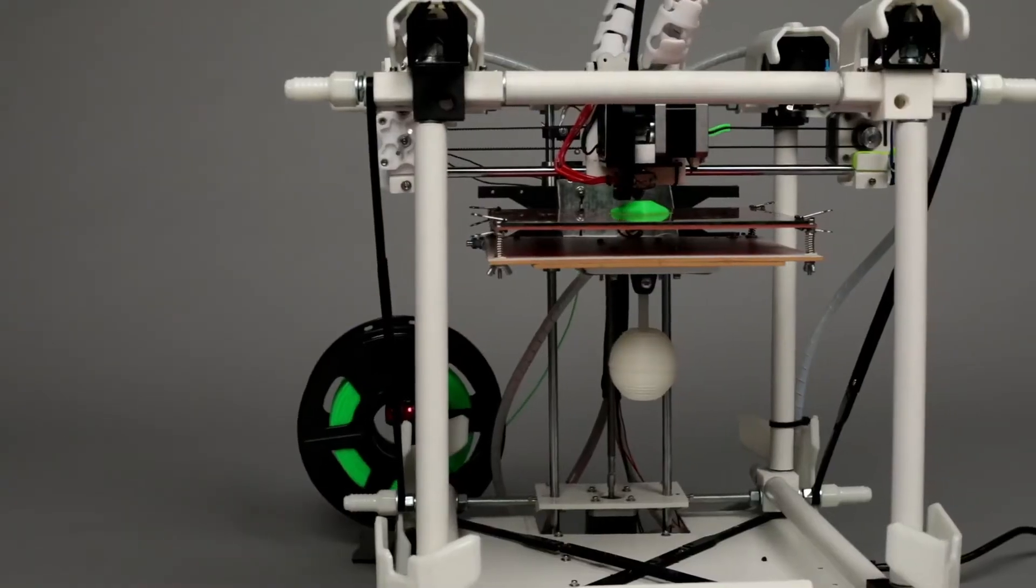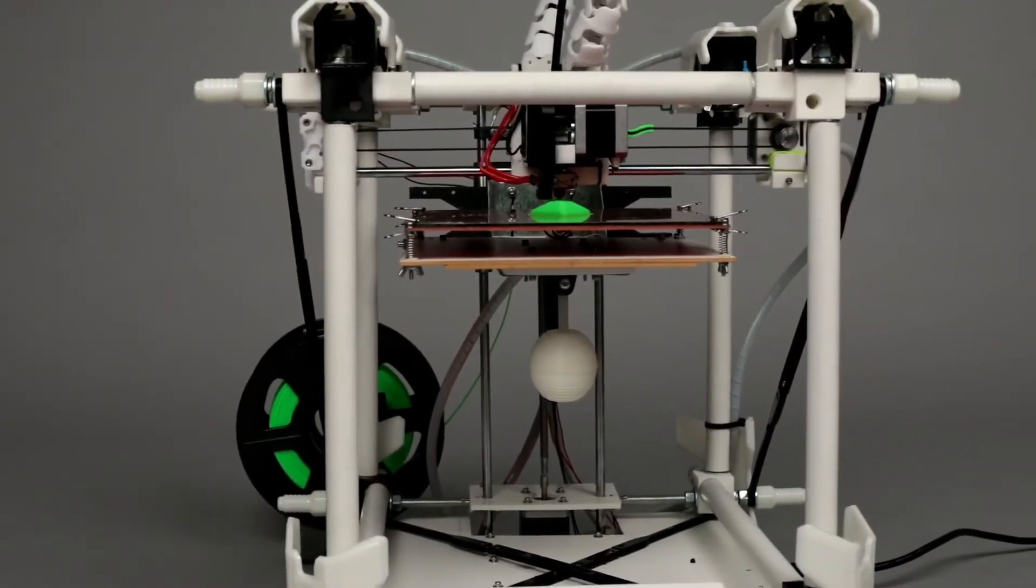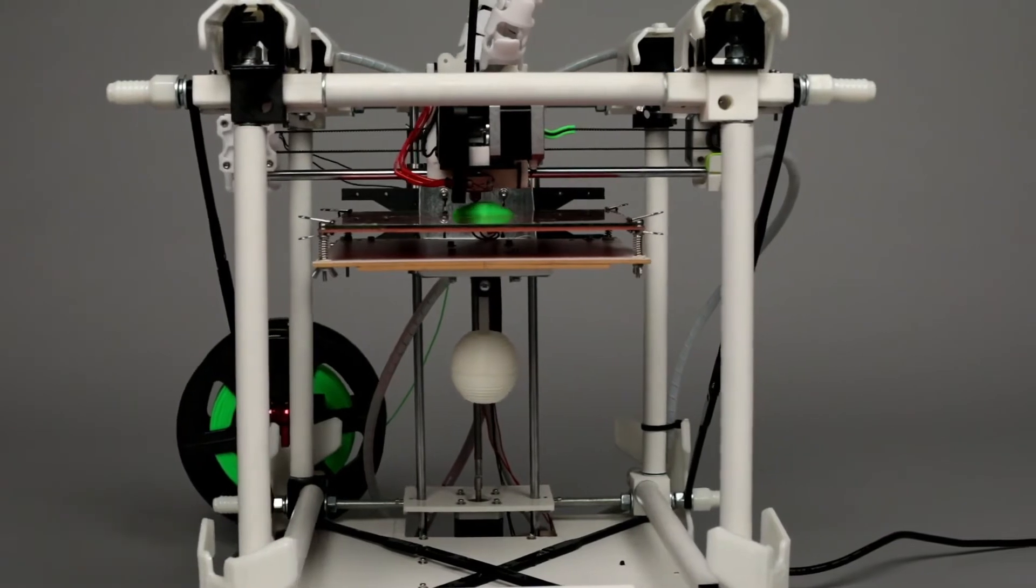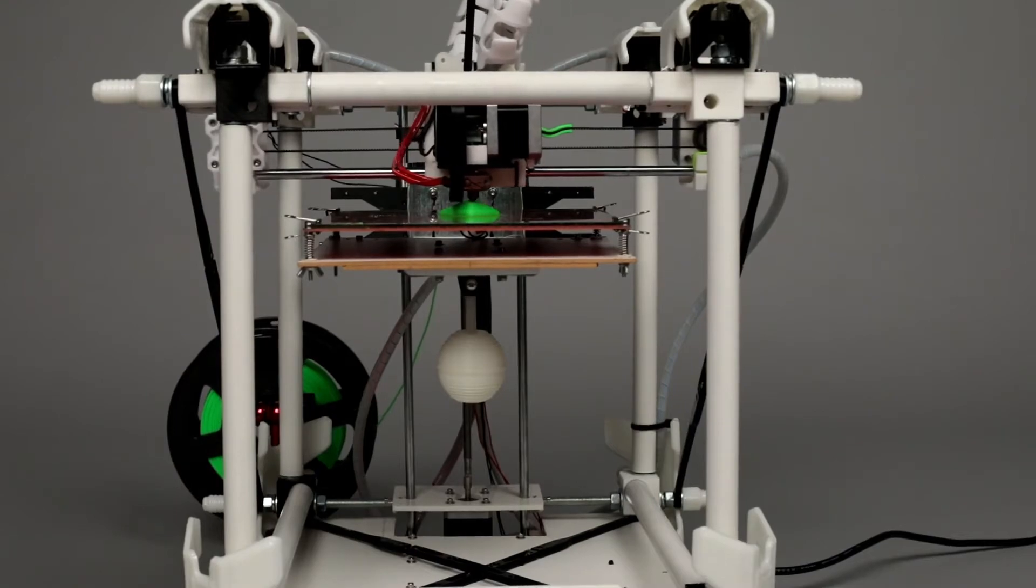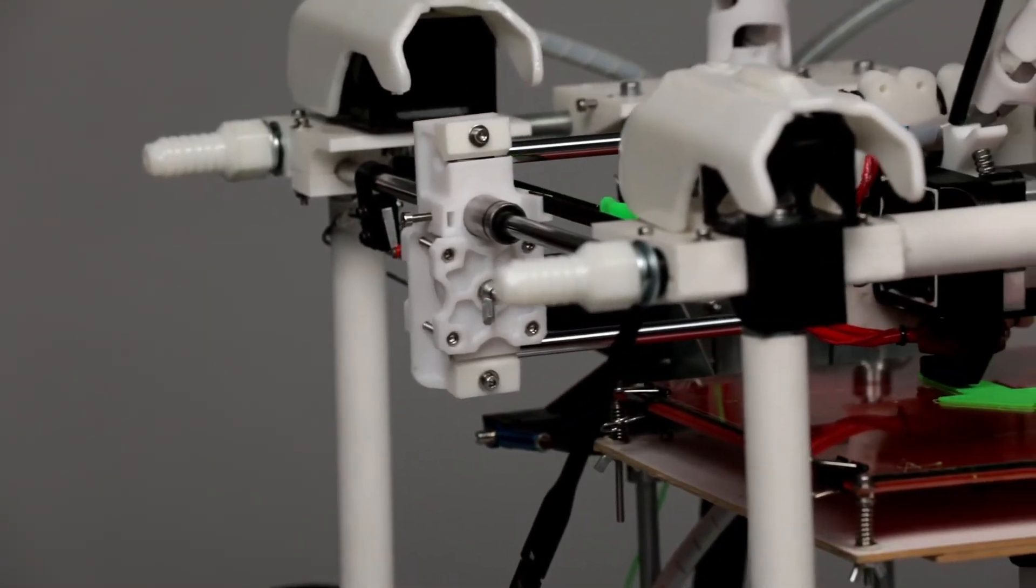We then added something never seen before on a 3D printer – a patent-pending tuned mass damper that counteracts printing vibration, to practically eliminate wobble. And the tuned mass damper helped us make it fast – really fast.